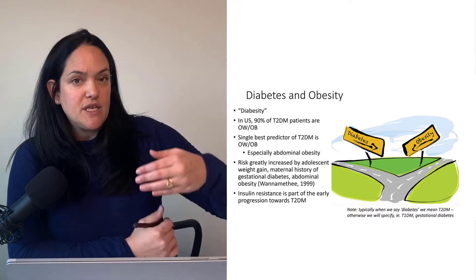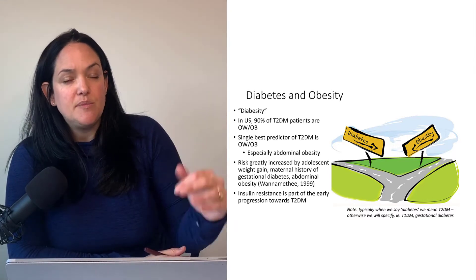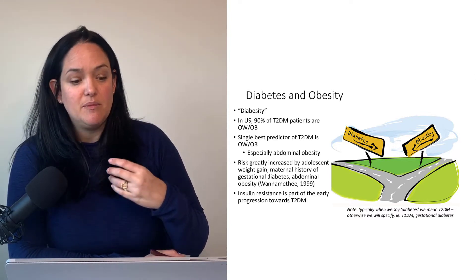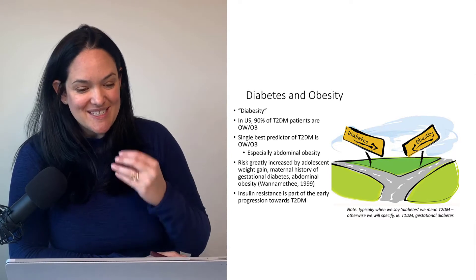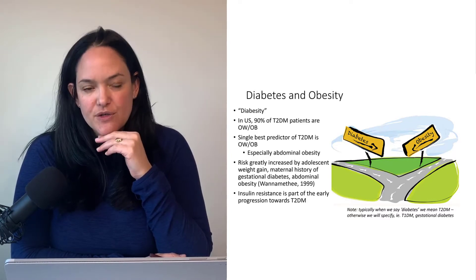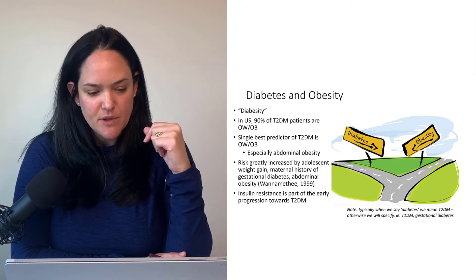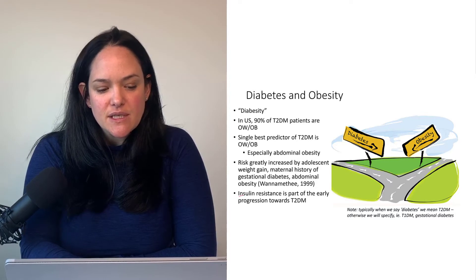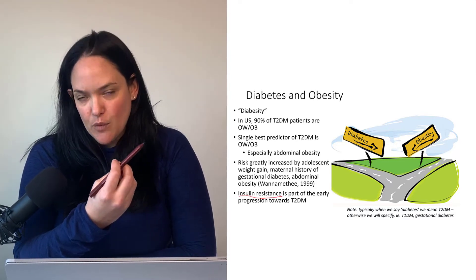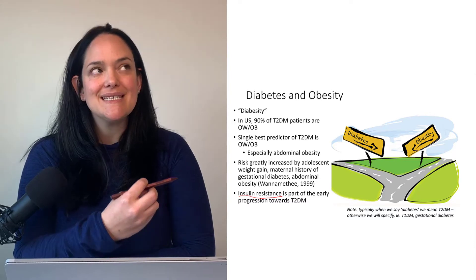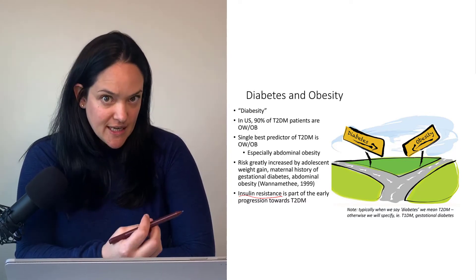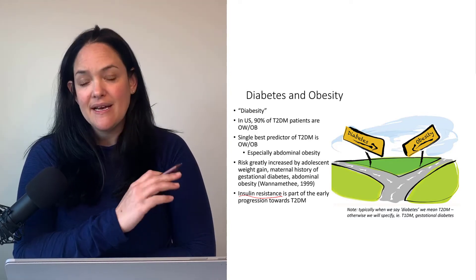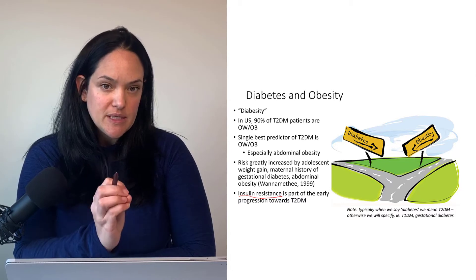There are a number of risk factors that increase the risk of type 2 diabetes in individuals with obesity: adolescent weight gain, maternal history of gestational diabetes, and abdominal obesity — those are all more consistent predictors. As we'll see in this unit, insulin resistance is really the thing linking obesity and type 2 diabetes, though we don't fully understand the mechanism behind how obesity promotes insulin resistance.